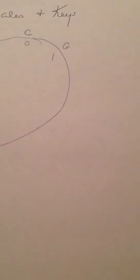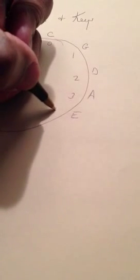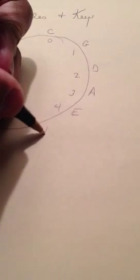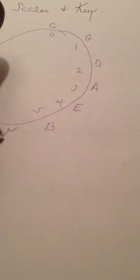Then you move from C up a fifth to the key of G, and G has one sharp. Then you go to the key of D. D is going to have two. Then you'll go up a fifth to A. A has three. You go up a fifth to the key of E. E has four. A fifth up to the key of B, and B has five. A fifth up from B is F sharp. It has six sharps. Then you go up to the key of C sharp, which has seven sharps.